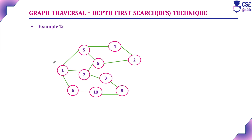The procedure is: initially we need to consider one vertex as the starting vertex and mark it as visited. Next, consider the adjacent unvisited vertices to the currently visited vertex 1. The adjacent unvisited vertices are 5, 7, and 6. Break the tie and visit in number order, so visit vertex 5 first.